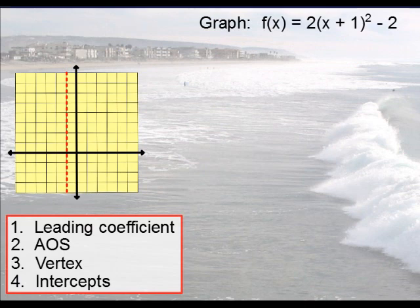Here's an example. Graph f of x equals 2 times the quantity x plus 1 squared minus 2. Now, for this one, we want to again determine these guys in this particular order, starting off with the leading coefficient. Remember, the leading coefficient tells us whether or not it opens up or down. In this case, the leading coefficient is 2. Therefore, we know this opens up.